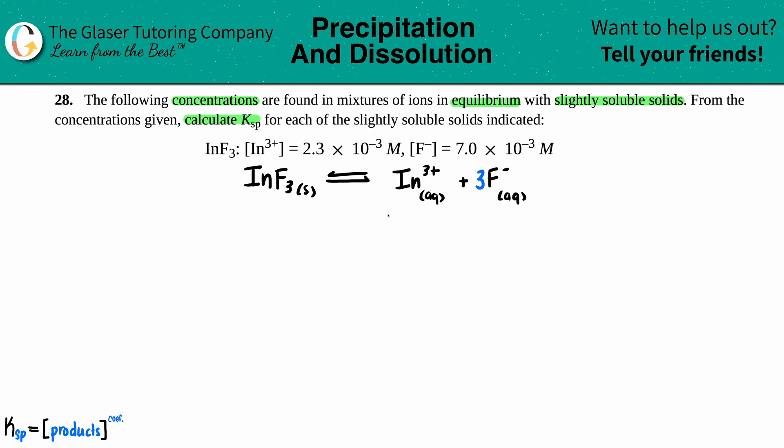Now I'm just going to say, okay, what were the concentrations they gave us? The indium was 2.3 × 10⁻³ M and the fluorine is 7.0 × 10⁻³. It is a common mistake that, you know, you see a 3 in front here so you have to times this by three, but no, whatever they tell you is the concentration, that's what you have. This 3 is just for ratio purposes, but whatever they give you, that's what you got to use.